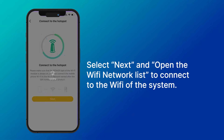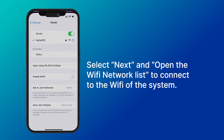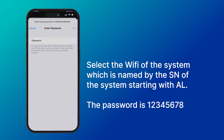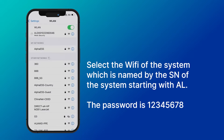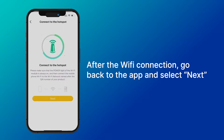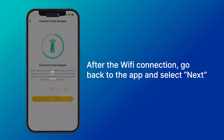Select next and open the Wi-Fi network list to connect to the Wi-Fi of the system. Select the Wi-Fi of the system, which is named by the SN of the system starting with an L. The password is 12345678. After the Wi-Fi connection, go back to the app and select next.